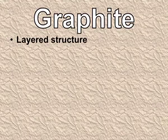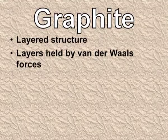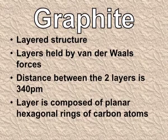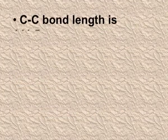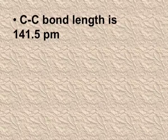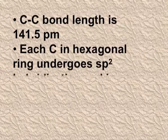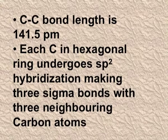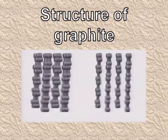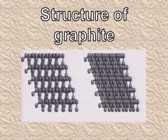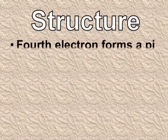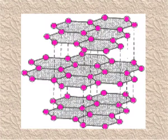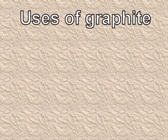Graphite has a layered structure. The layers are held together by van der Waals forces, with a distance of 340 picometers between two layers. Each layer is composed of planar hexagonal rings of carbon atoms. The carbon-carbon single bond length is 141.5 picometers. Each carbon in the hexagonal ring undergoes sp2 hybridization, making three sigma bonds with three neighboring carbon atoms. The fourth electron forms a pi bond, and the electrons are delocalized over the whole sheet.